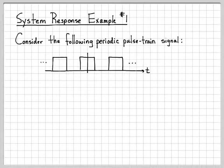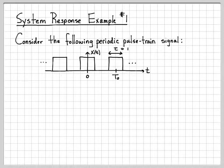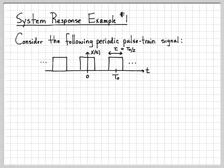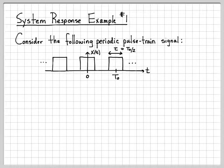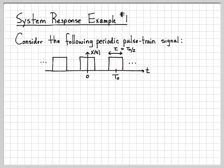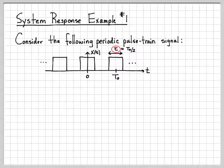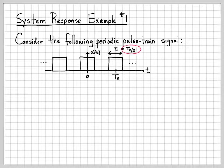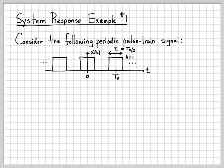So the input to the system is this periodic pulse train signal right here. So this is the signal x of t. It consists of an infinite pulse train, pulses spaced at regular intervals t0. The width of these pulses is denoted by the variable tau. In this particular example, we're letting tau equal t0 over 2. The amplitude of these pulses is equal to 1.